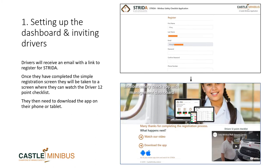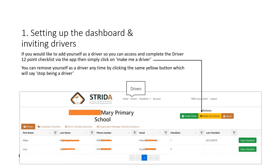Your drivers will receive an email with a link to register for Strider. Once they have completed the simple registration process, they will be taken to a page where they can watch the video of the daily minibus walk-around check, and then they will be asked to download the app from either the Google Play Store or Apple App Store depending on their device. If you are also a driver, you can make yourself a driver by clicking on the drivers tab and then the yellow box that says 'make me a driver'. You can remove yourself as a driver at any time by clicking that same yellow button, which will then say 'stop being a driver'.